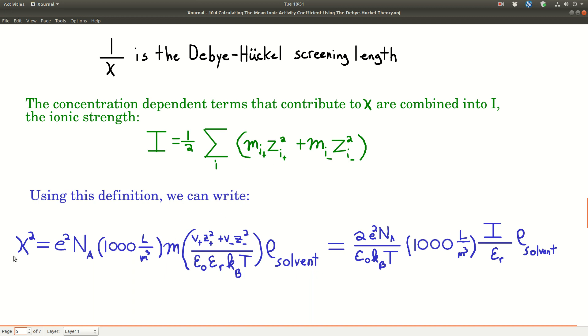Using this definition, we can write kappa squared where we're replacing that term with I, and then the two comes from this really being two times I because of the one half. This simplifies it further.